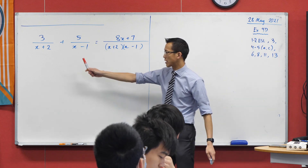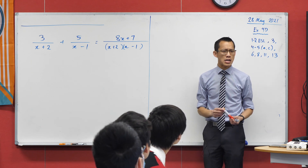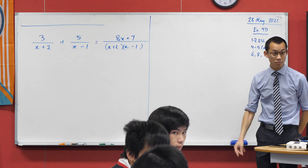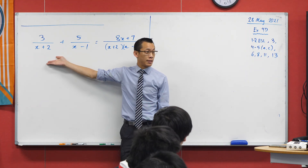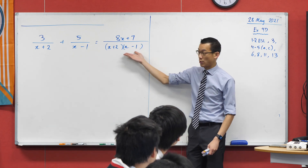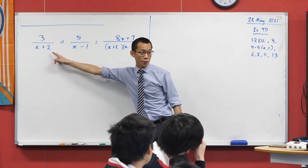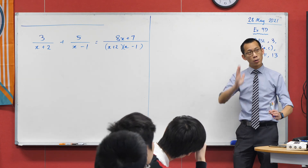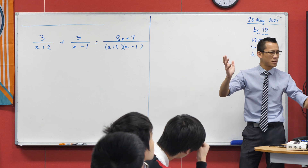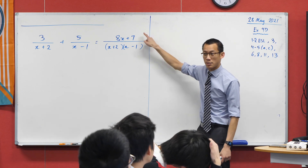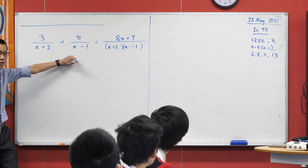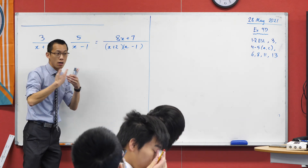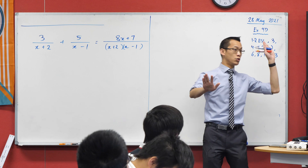Under what circumstances might taking this from the left to the right be a useful thing to do? What context might make you say, I should turn this into this? If I said, please graph this function, I think this combined form would arguably be a next step. Off of these denominators, what can you tell me about the graph immediately? You get some vertical asymptotes. But then you need intercepts. So instinctively you go to this form. In fact, you can read off the x-intercept just off of this — it's negative 7 eighths. I could not see that in the original form. This form just makes it immediately obvious. So this is why we might go from the left-hand side to the right-hand side.